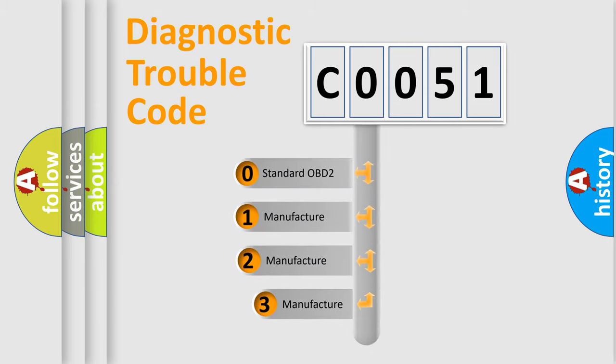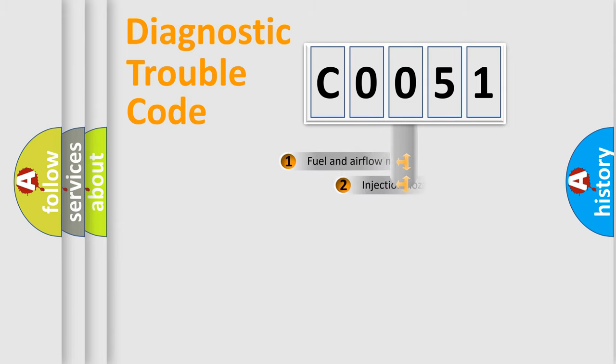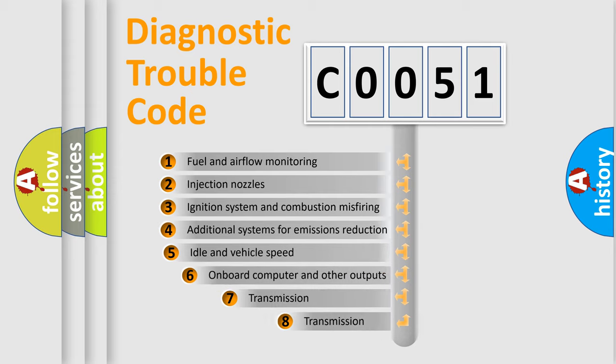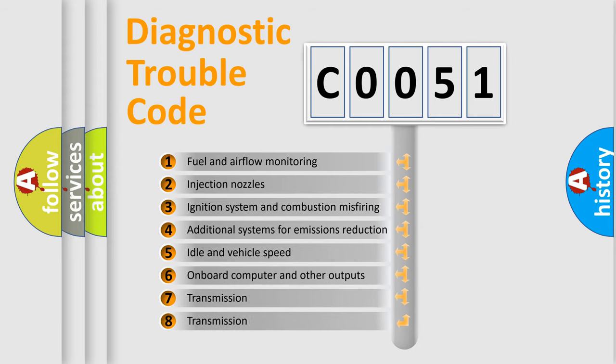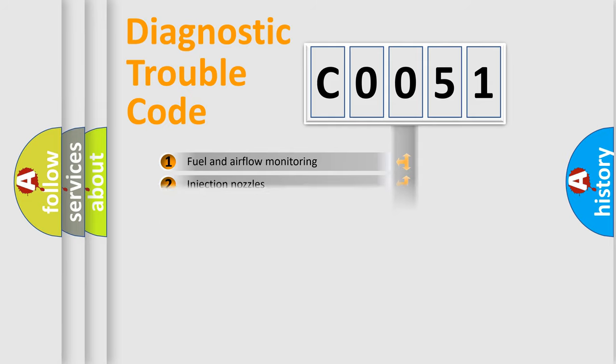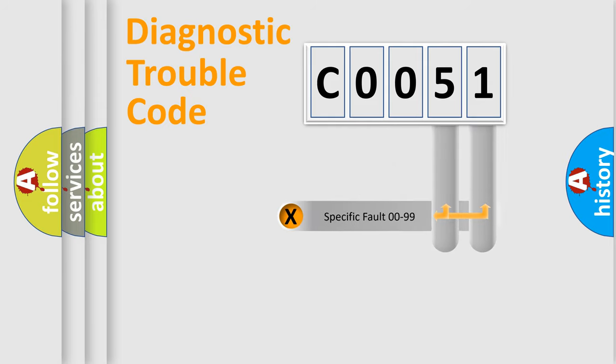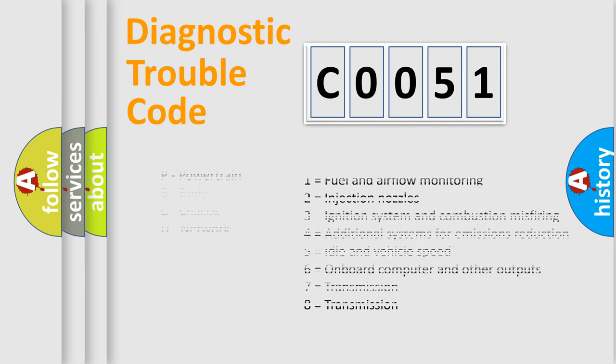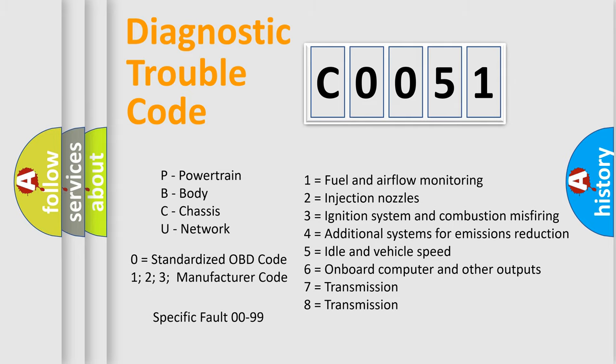If the second character is expressed as zero, it is a standardized error. In the case of numbers 1, 2, or 3, it is a manufacturer-specific error. The third character specifies a subset of errors. The distribution shown is valid only for the standardized DTC code. Only the last two characters define the specific fault of the group. Let's not forget that such a division is valid only if the second character code is expressed by the number zero.